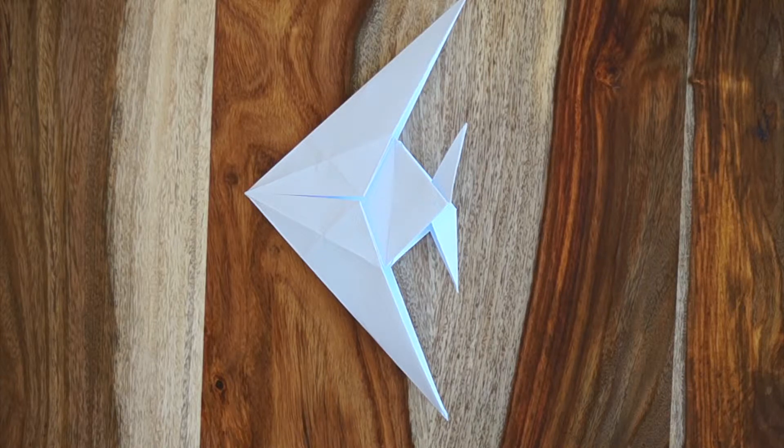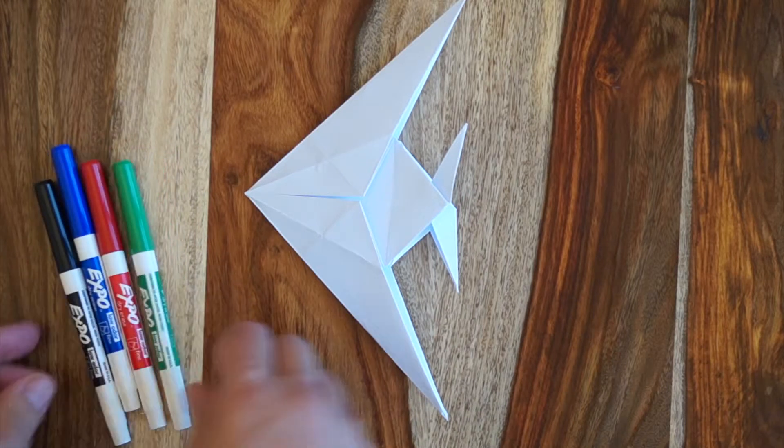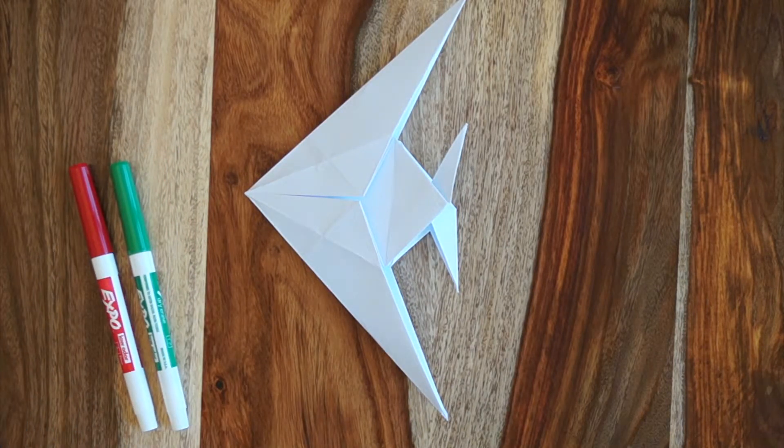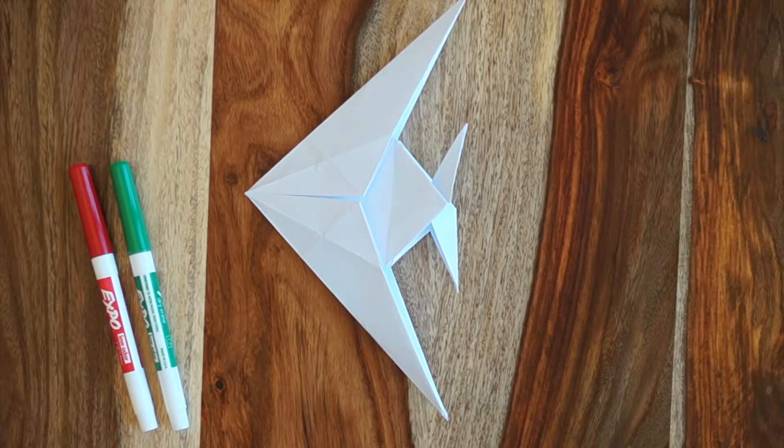What I'm going to do is take some of these markers that I have here and color the fish. This is more informational as opposed to something you need to do. Obviously you can color your fish before you're done folding.